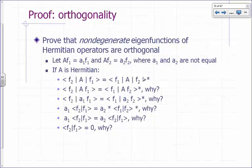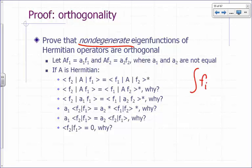Orthogonality. We can actually prove that if you have non-degenerate eigenfunctions of a Hermitian operator, those eigenfunctions are orthogonal. So what does orthogonal mean? The integral of f_i* f_j d-tau is equal to zero if f_i and f_j are orthogonal.